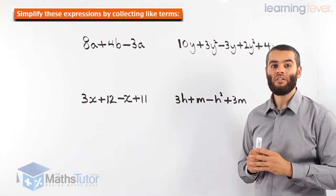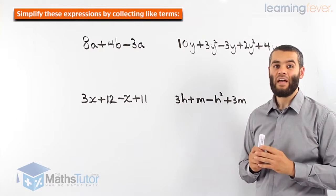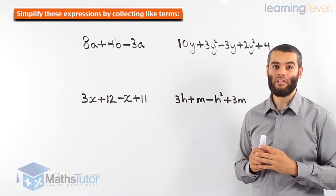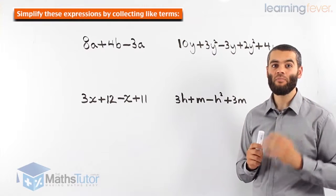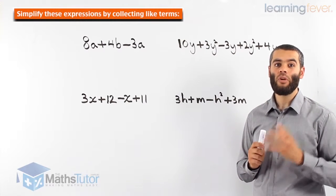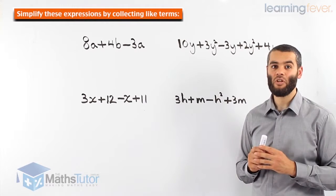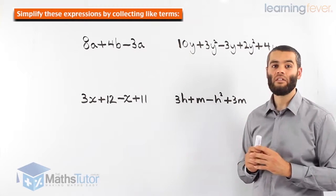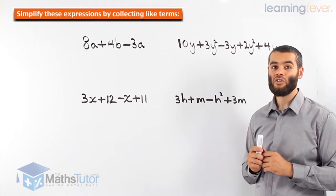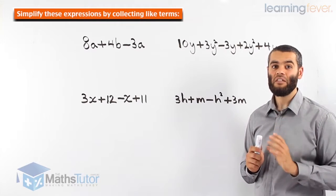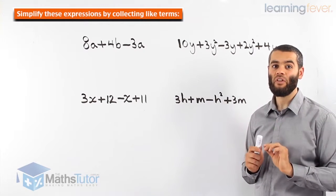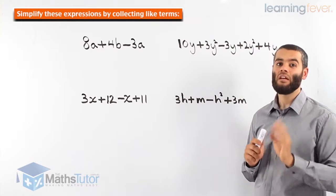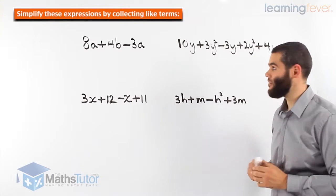In a previous example, we learnt how to collect like terms — adding and subtracting algebraic expressions to simplify them. Now we're going to do more complicated algebraic expressions. They are easy; however, we just need to be very careful to make sure we are only adding or subtracting like terms. Let's get started.